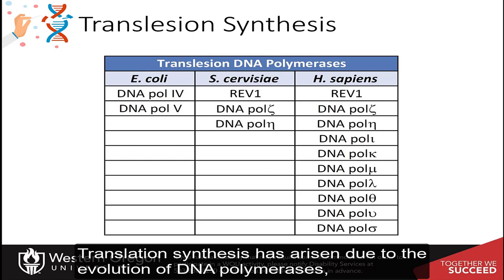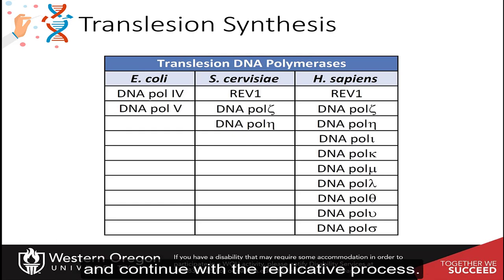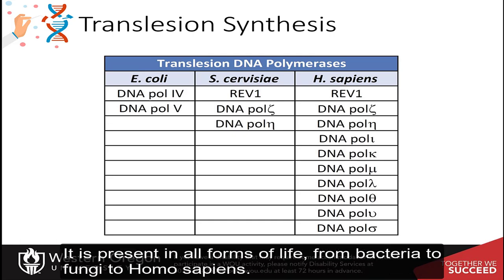Translesion synthesis has arisen due to the evolution of DNA polymerases that can tolerate the presence of distorted DNA lesions and continue with the replicative process. It is present in all forms of life, from bacteria to fungi to homo sapiens.